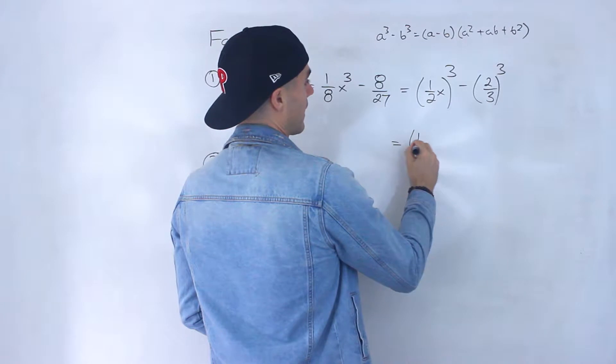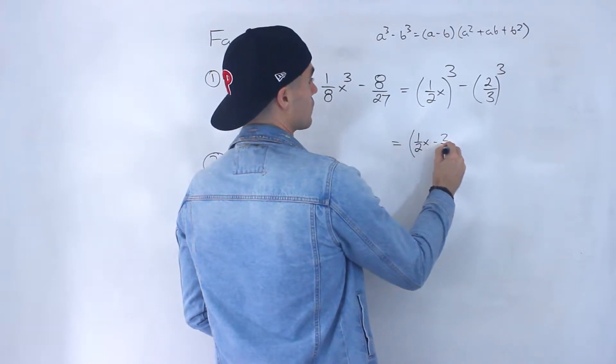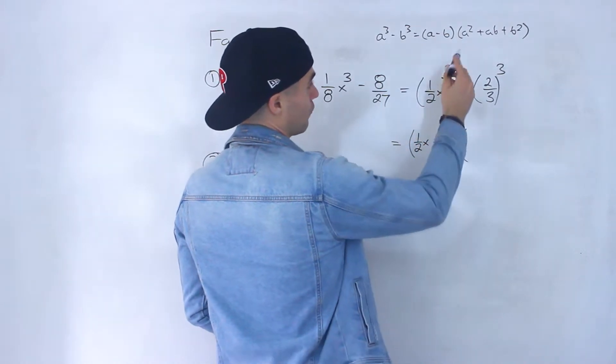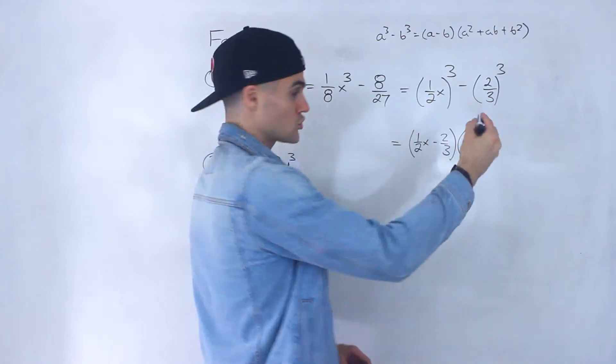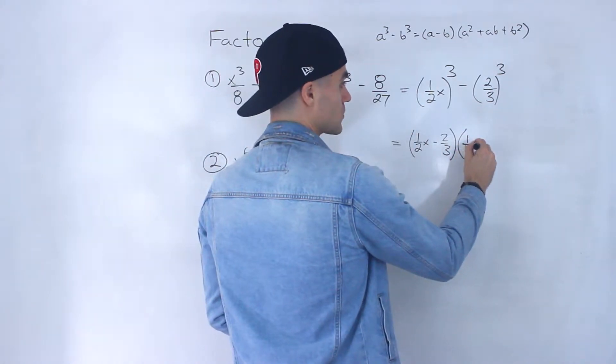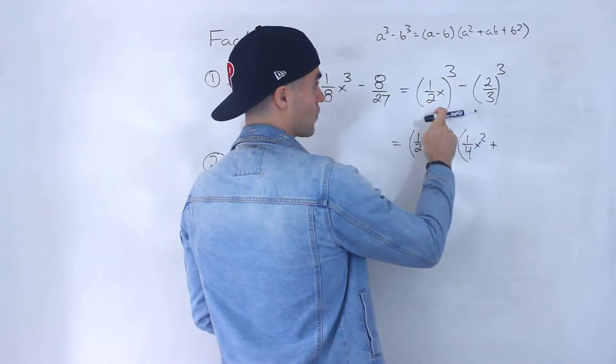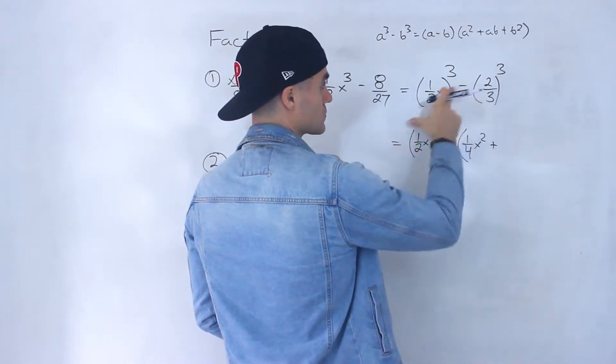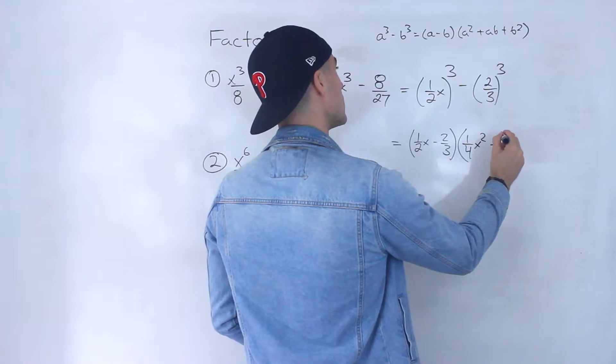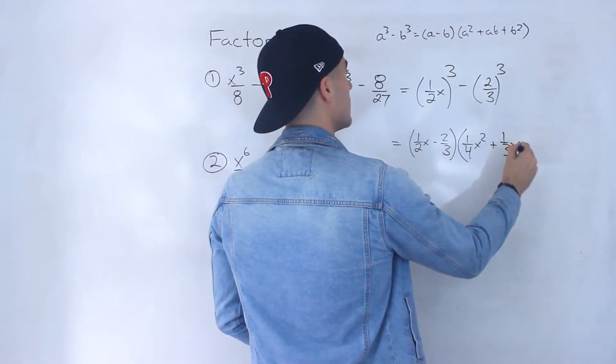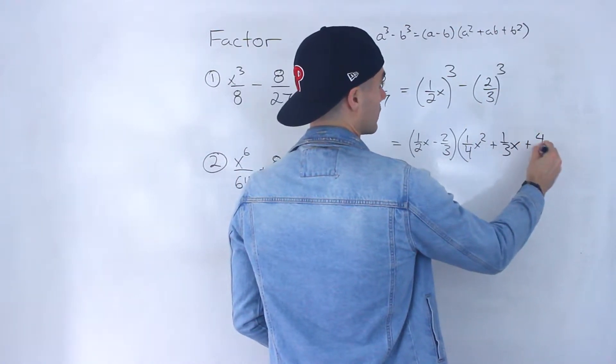So this would be 1 half x minus 2 over 3. Then we'd have 1 half x to the power of 2, which would be 1 over 4x squared. Plus 2 over 3 times 1 over 2x. The 2's would cancel out. So we'd be left with 1 over 3x. Then 2 over 3 to the power of 2 would be 4 over 9.